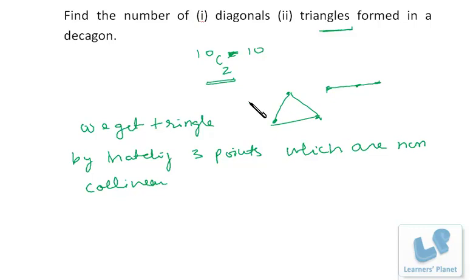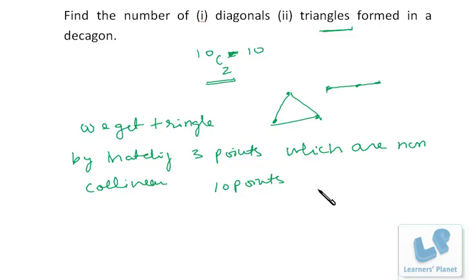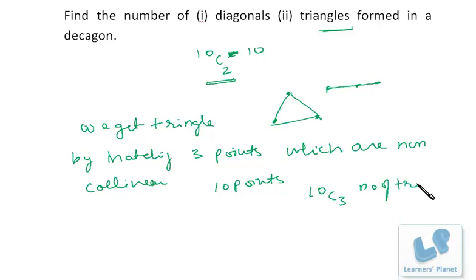A decagon has 10 points. Every combination of three points gives one triangle, so the number of triangles in a decagon is 10C3.